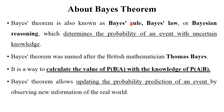Bayes' theorem is also known as Bayes' rule or Bayes' law. It was named after the British mathematician Thomas Bayes, who developed this theorem to calculate probability in a particular environment. To calculate probability, you must have knowledge of that particular environment — for example, environments related to online gaming or mathematical functions require some theoretical knowledge.